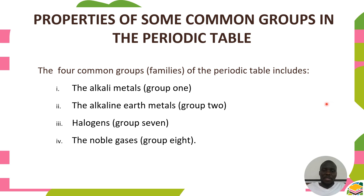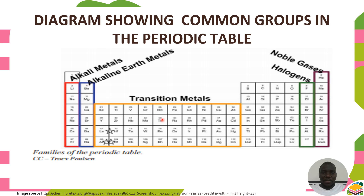We now shift focus to the properties of common groups in the periodic table. The periodic table comprises eight groups, and there are four common groups: Group 1 elements, known as alkali metals; Group 2 elements, known as alkaline earth metals; Group 7 elements, known as halogens; and Group 8 elements, known as noble gases. On the periodic table, Group 1 is on the far left, Group 2 is beside it, and Groups 7 and 8 are close together on the right.